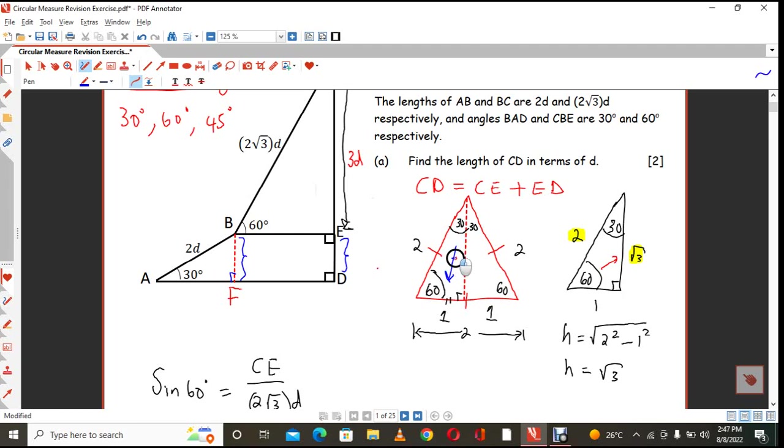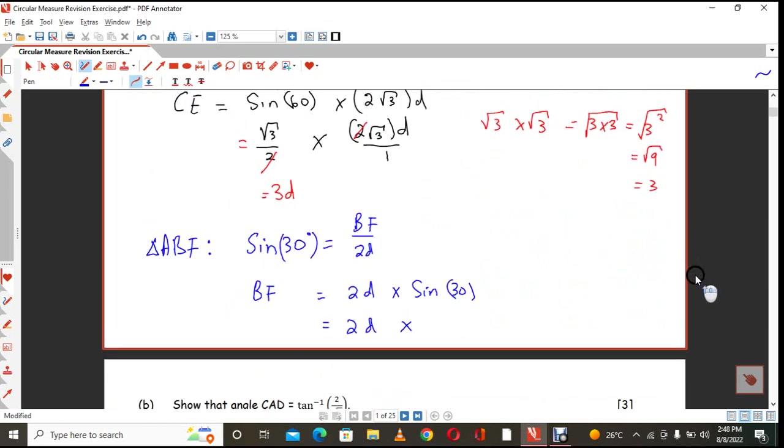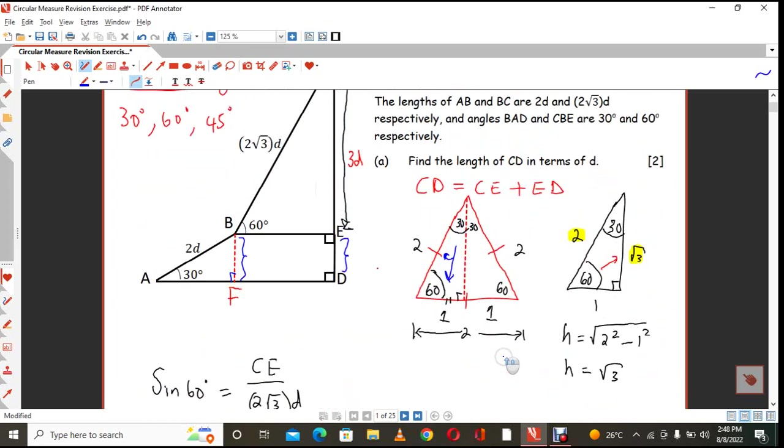Because sine is opposite over hypotenuse. So it's the opposite one divided by the hypotenuse. So it's going to be 1 half. So the sine of 30 degrees is 1 half. And if you multiply 2D times 1 half, you get that that value is equal to D.